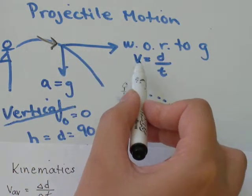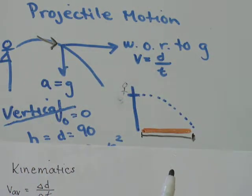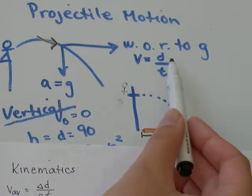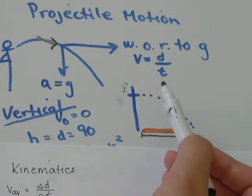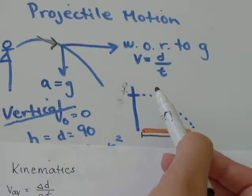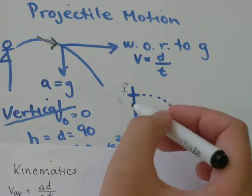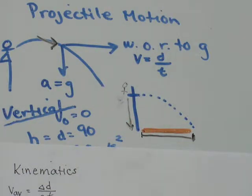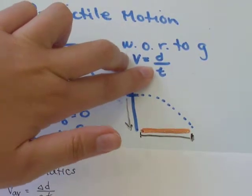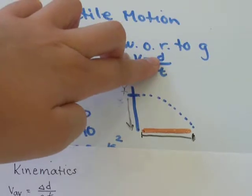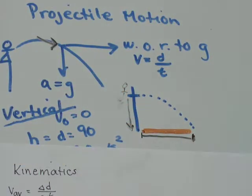We're going to use the formula V equals D divided by T. The velocity, we're told, is 10 meters per second. We don't have the distance or the displacement. We don't have the time either. You can't solve an equation where you have two unknowns. What that means is, we need to look at the vertical component of this velocity vector to solve for time, so that we can use velocity and time to solve for displacement or distance down here in orange.